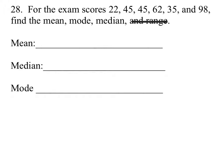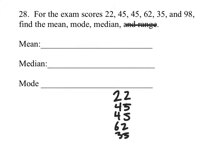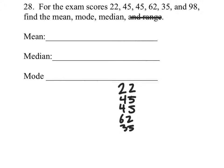Alright, the mean. We're going to add all the values up and then divide that by the number. So we got 22 plus 45 plus 45 plus 62 plus 35, and I'm running out of space, plus 98.